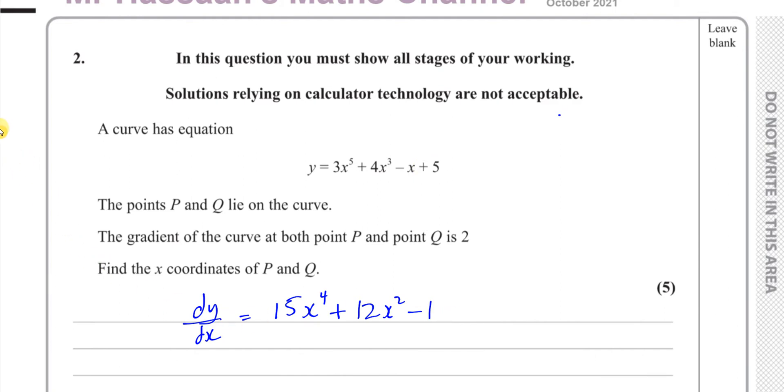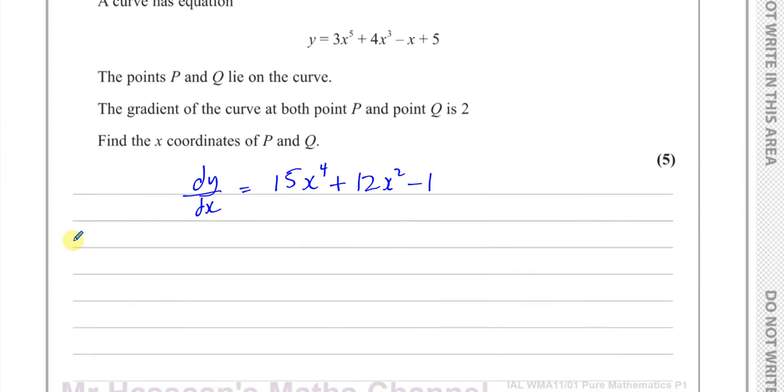So this is dy/dx and we have to find when dy/dx equals 2. The gradient of the curve at P and Q is 2 so we've got to equate dy/dx to 2 and that will help us find the points P and Q. So 15x to the power of 4 plus 12x squared minus 1 equals 2.